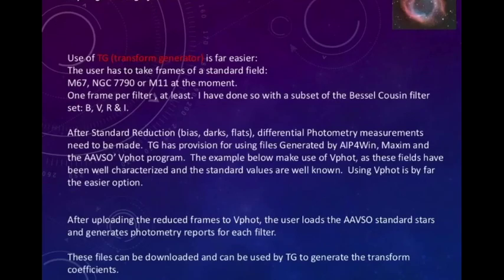Basically, Transform Generator does all the work for you. You go to a standard field, you know, take a picture. Take a picture of M67 or NGC 7790. How many transforms do you want? You want all four? You take four fields with the four filters, BVRI, or five if you want to include U. And then you do standard reduction and upload. I've used VPhot because to me it's the easiest tool, but you can also use any other package that can do reduction, that can extract instrumental magnitudes.